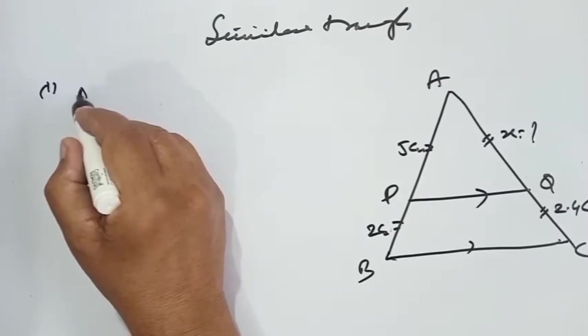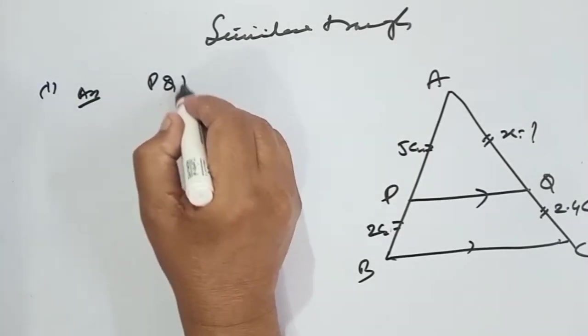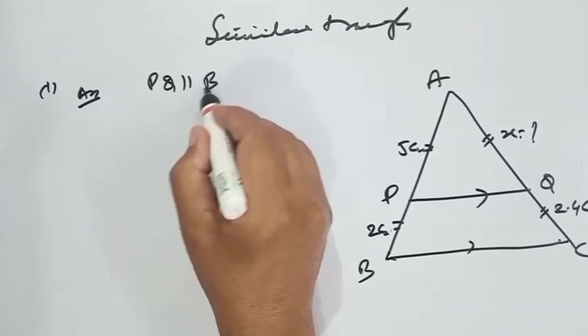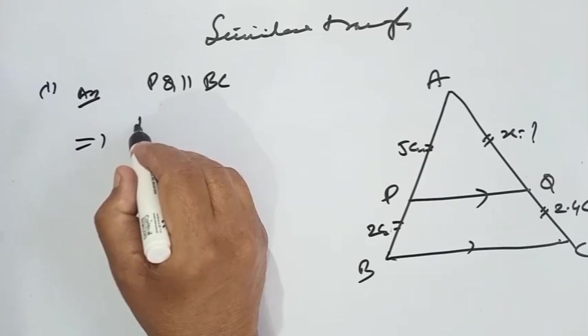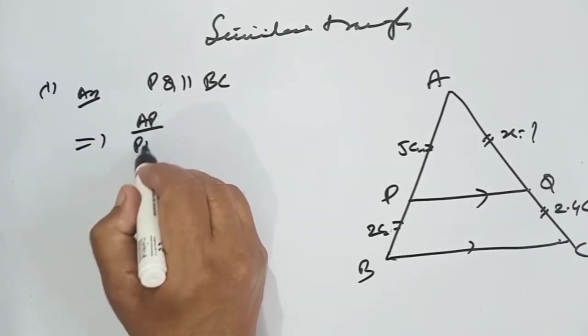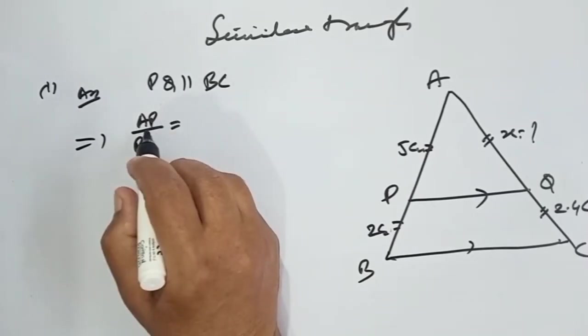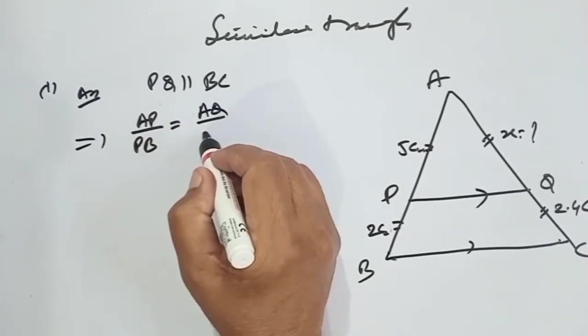The answer is PQ is parallel to BC. This implies that AP upon PB is equal to AQ upon QC.